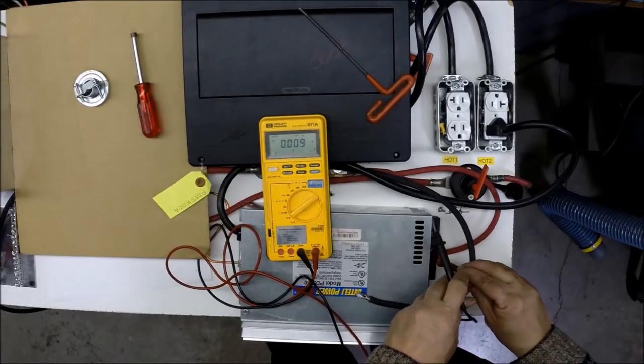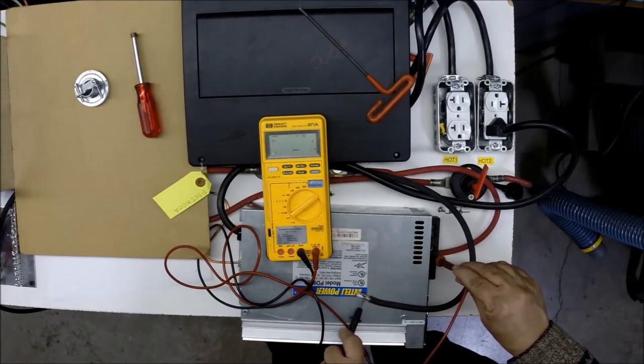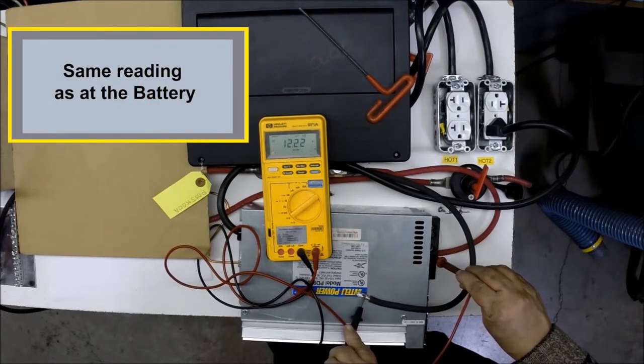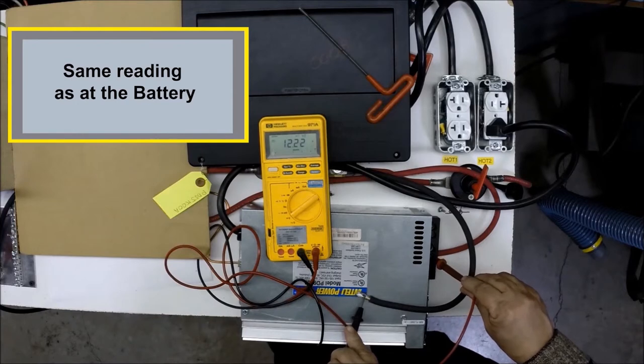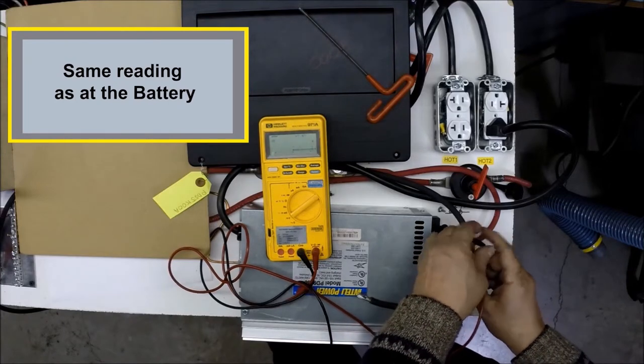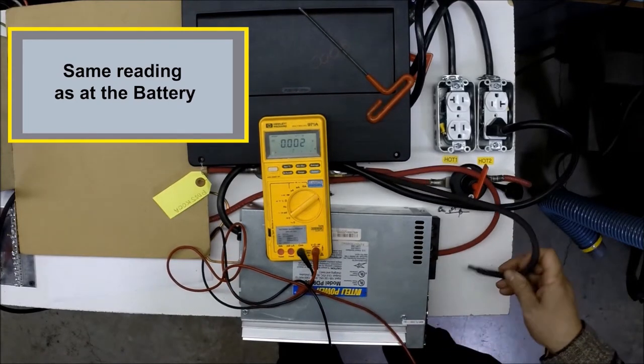We can now check the battery connection. Taking your black lead to the negative and your red lead to the positive, you should read the battery voltage here. If you do not read the battery voltage, there is a problem with connection to the battery or a blown fuse near the battery in the positive lead.